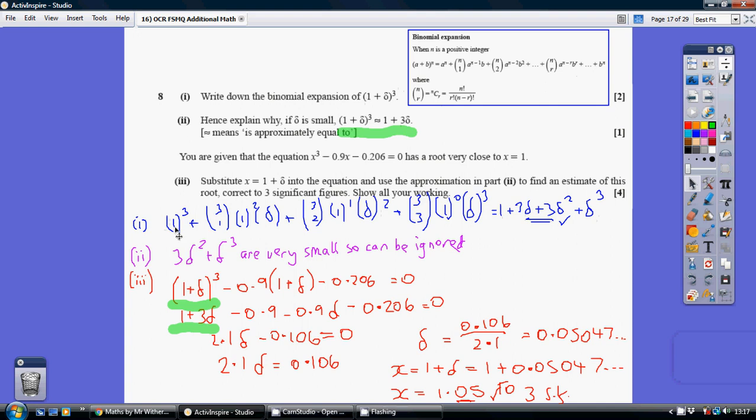So that just leaves us with these first two terms, which is the 1 plus the 3 delta. We can basically exclude the delta squared and the delta cubed.